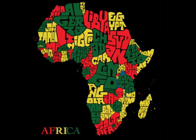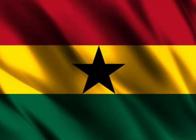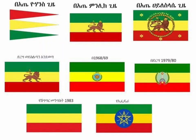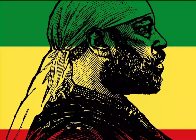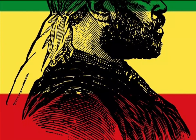The first African state to adopt a gold, red, and green flag upon independence was Ghana in 1957, designed by Theodosia Oko. The Ethiopian flag has been changed several times over the years as the country evolved from a monarchy to a dictatorship and then to parliamentary democracy. But these three colors remained. The flag with three stripes — green, yellow, and red — was officially used since 1897, after the Battle of Adwa against Italy.